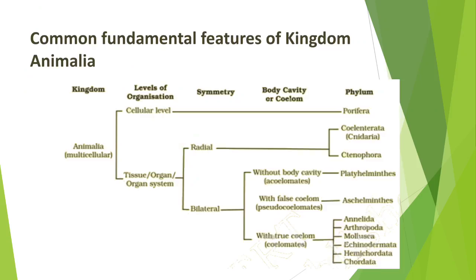This slide shows the fundamental features of kingdom Animalia. It shows how we classify all organisms and how they are placed in different phylums. Animalia belongs to multicellular organisms. At the cellular level we have Porifera; at tissue and organ levels there is division based on body symmetry — radial symmetry or bilateral symmetry. In radial symmetry, we have Coelenterata and Ctenophora.